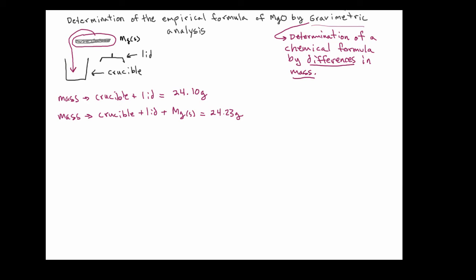Now, when I say that a gravimetric mass is determination of a chemical formula by differences in mass, you can see right now, if you look at these two values, if we take the difference in mass between them, we're going to actually get the mass of the magnesium. Now, how does this experiment work exactly?